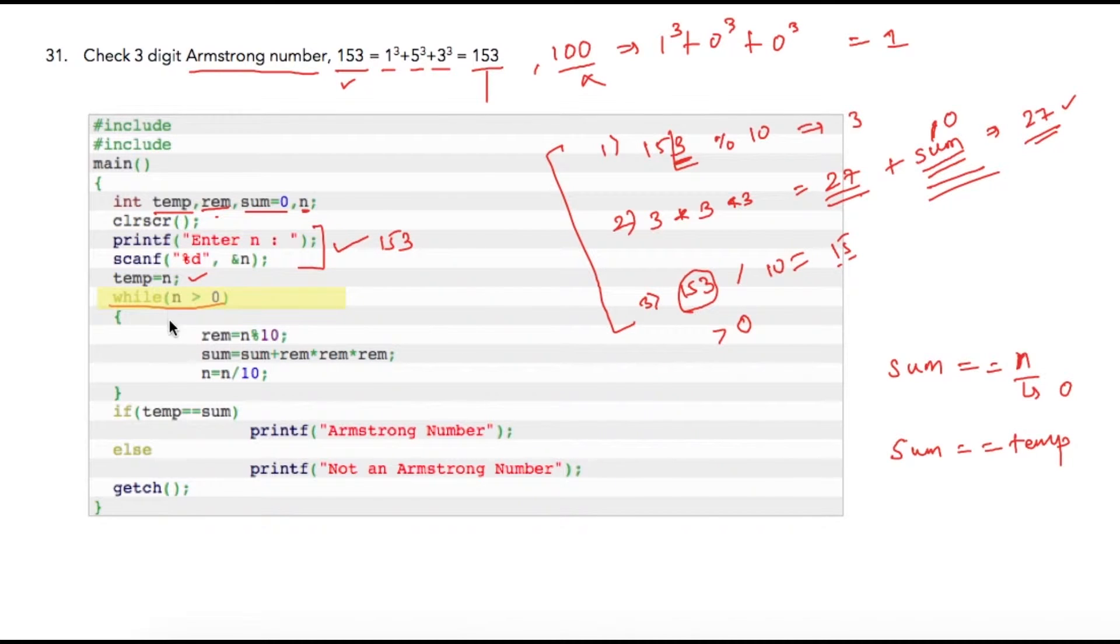Here is our while loop. Our condition is while n is greater than 0. Assuming user has entered 153, so 153 is greater than 0. Our first step is to divide 153 using modulus operator with 10, so we will get remainder as 3. Then we are doing multiplication and addition. As sum is initialized to 0, we are adding 0 plus 27, so our sum variable will become 27.